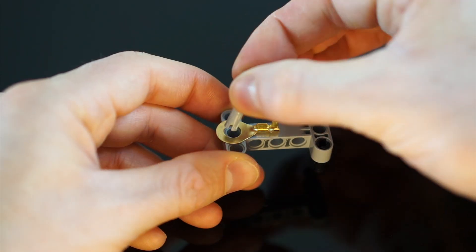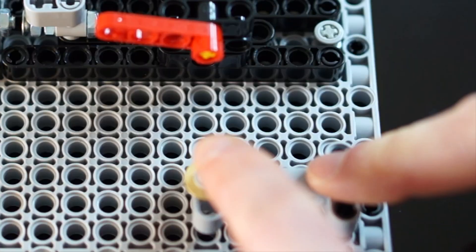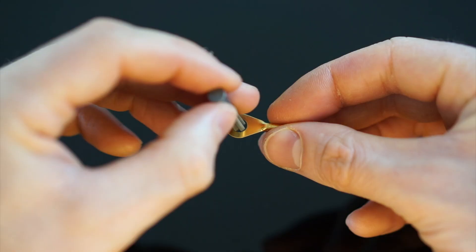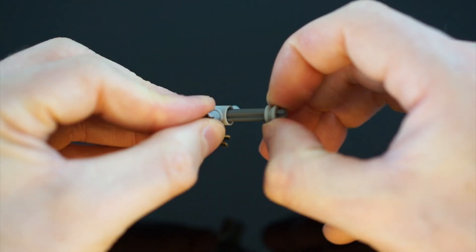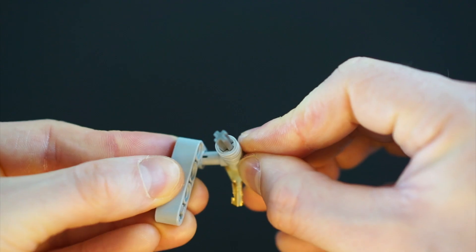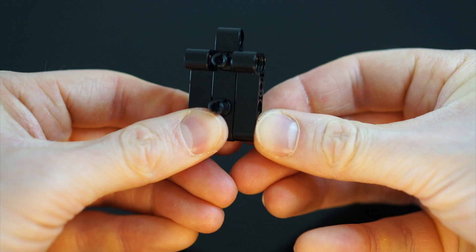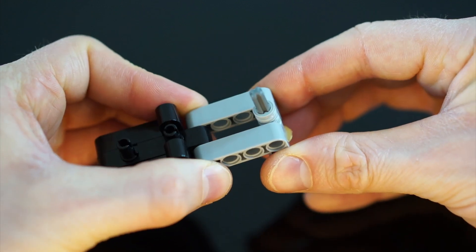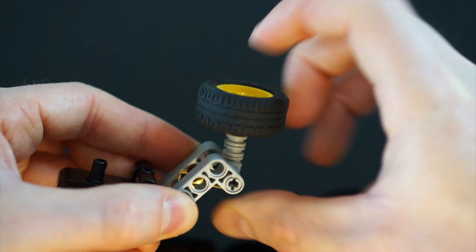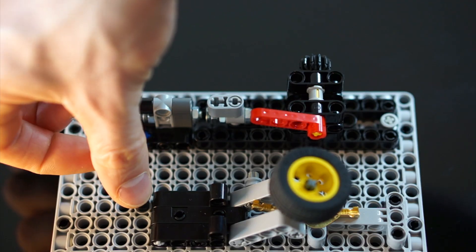Then we'll need a nice big Lego switch. These copper terminals here will do nicely. I'm gonna pop a wheel on top to make it easy to flip without having to fiddle around too much.